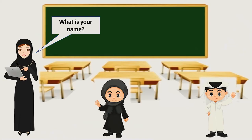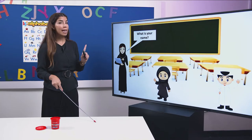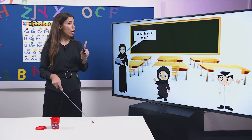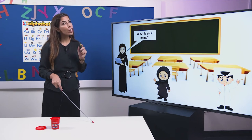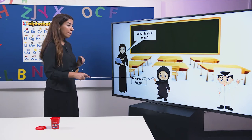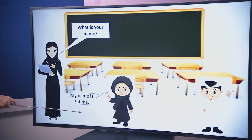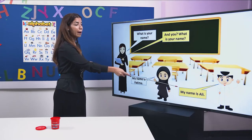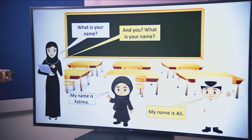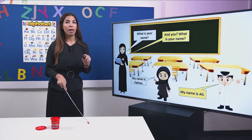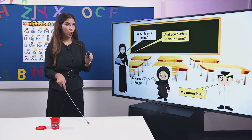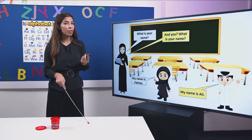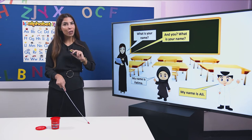What is your name? The teacher is asking about their names. When you want to ask someone about his or her name, you should ask the question: What is your name? My name is Fatima. And you, what is your name? My name is Ali. So, if you want to ask someone about his or her name, you should ask: What is your name? And if someone asks you about your name, then you should answer: My name is… and you mention your name.